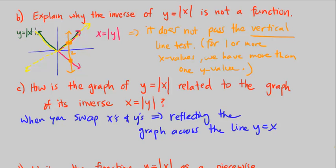This is a ray coming out of the origin. When you reflect across the line y equals x, like a mirror, whatever's on the mirror stays in the same place. So how are they related? It's a reflection across the line y is equal to x. This is very important — swapping x's and y's gives you a reflection across y equals x, which gives us the inverse relation of a graph.